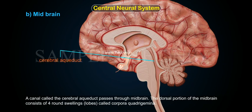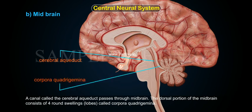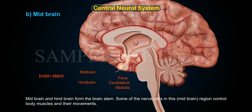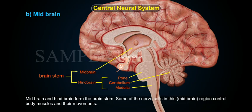The dorsal portion of the midbrain consists of four round swellings called corpora quadrigemina. Midbrain and hindbrain form the brain stem. Some of the nerve cells in the midbrain region control body muscles and their movements.